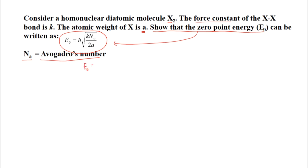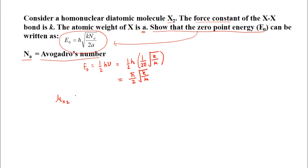We know the zero point energy E₀ = ½hν = ½h × (1/2π)√(K/μ) = (ℏ/2)√(K/μ). The mass of one atom is A/N_A, so the reduced mass for the homonuclear X₂ is μ = (A/N_A)² / (2A/N_A) = A/(2N_A).